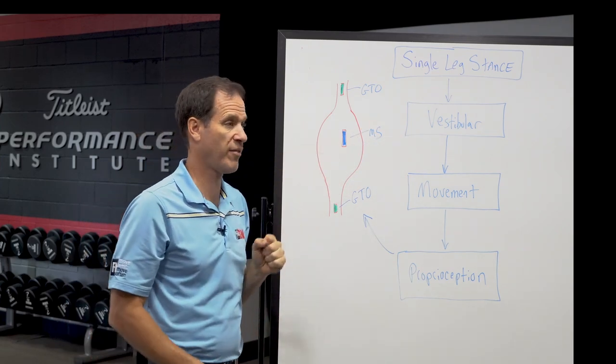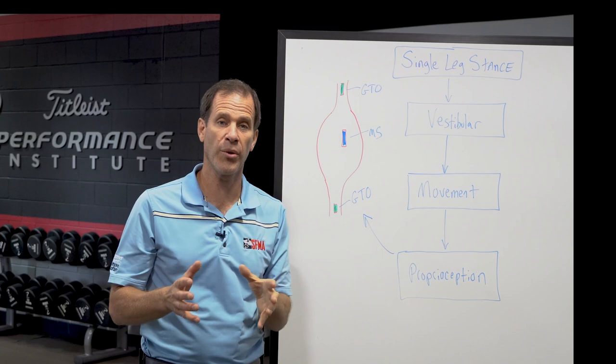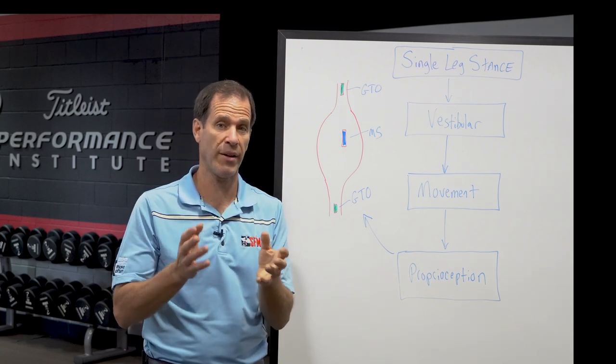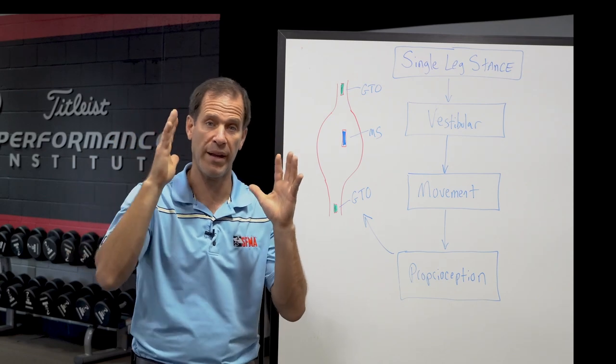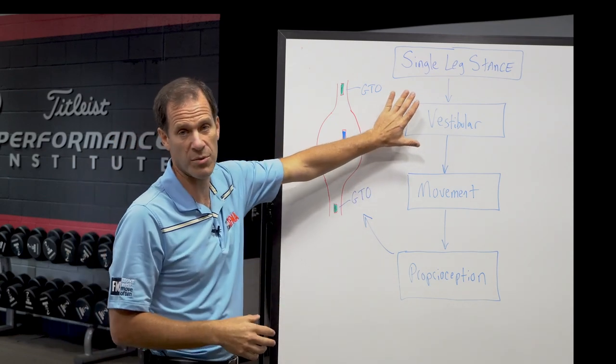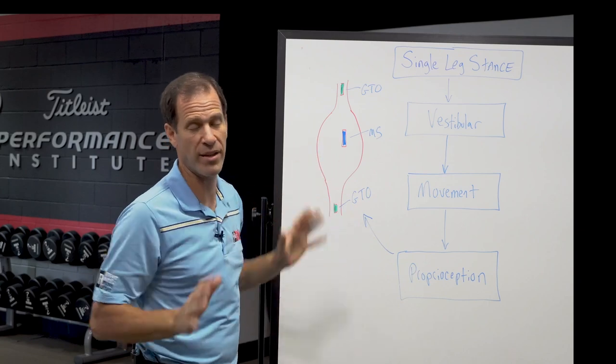The first thing we do is we check the vestibular system. Now, we all know that there's another system that helps maintain your balance. And it's your inner ear, there's fluid in your inner ear that acts like a level that helps maintain upright balance. So one of the first things we're going to do is we're going to clear the vestibular system, just make sure that's not a problem.